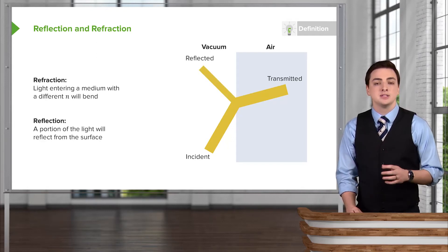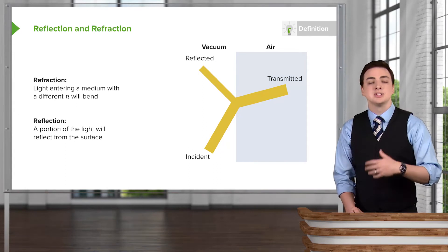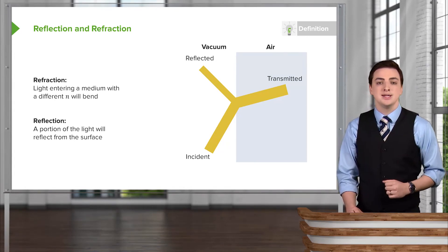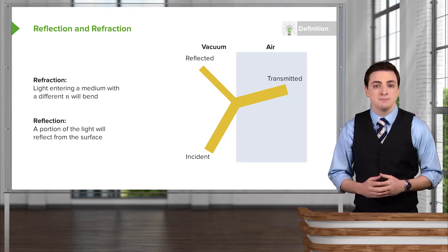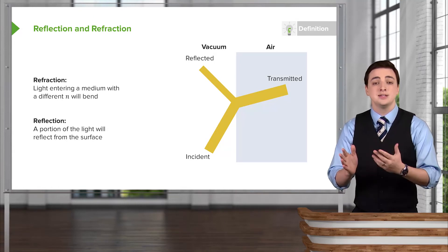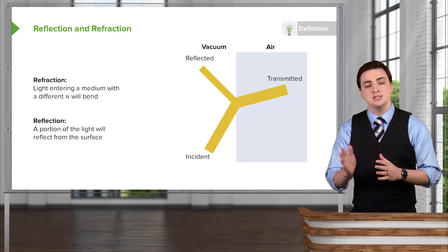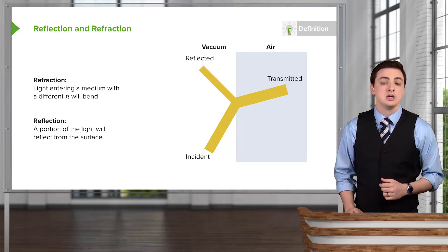but some of the light will also be reflected when it hits the boundary of a new medium. We have an incident wave, which is the light wave going in towards the medium. Part of that incident wave will bend into the medium and part of it will be reflected from the medium.